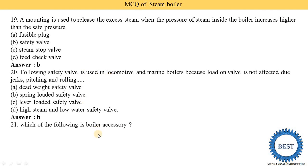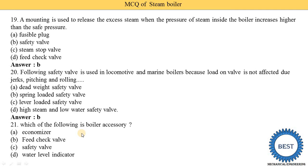Which of the following is a boiler accessory? Options are economizer, feed check valve, safety valve, and water level indicator. The economizer is an accessory; the other three are mountings. There are seven types of accessories: feed pump, injector, economizer, air pre-heater, super-heater, steam separator, and steam trap. The correct answer is economizer.